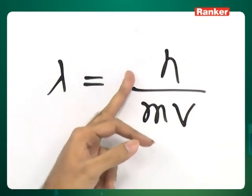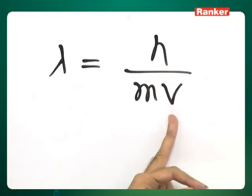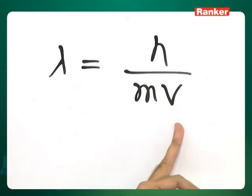Here h is Planck's constant, m is mass of that object, and v is the velocity with which the electron or the particle moves.